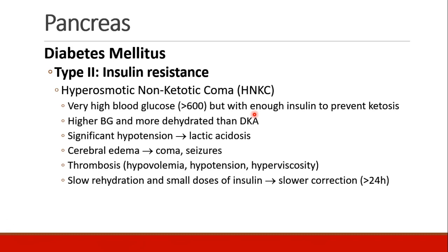If type 1 diabetics are at risk for DKA, type 2 diabetics are at risk for hyperosmotic non-ketotic coma. These patients have very high blood glucose, often greater than 600, and have just enough insulin to prevent ketoacidosis or ketosis. Relative to DKA, the blood glucose is higher and they can actually be more dehydrated. Patients become quite hypotensive, and the hypoperfusion can lead to lactic acidosis. Cerebral edema can occur, leading to coma and seizures. Thrombosis can occur due to hypovolemia, hypotension, and hyperviscosity of the blood. Treatment is slow rehydration and small doses of insulin to correct hyperglycemia, and correction can be done over 24 hours.